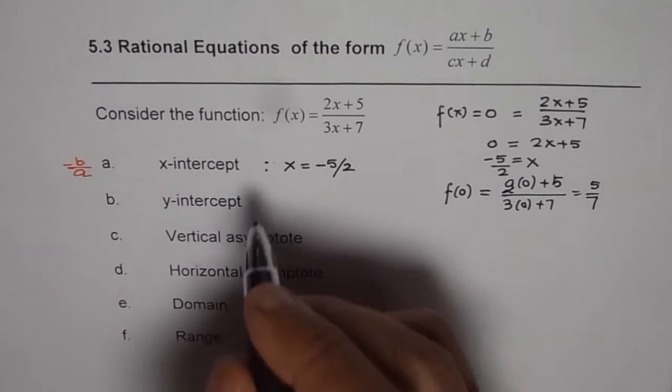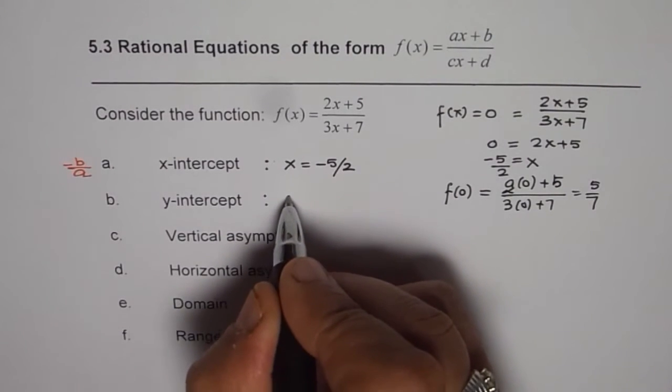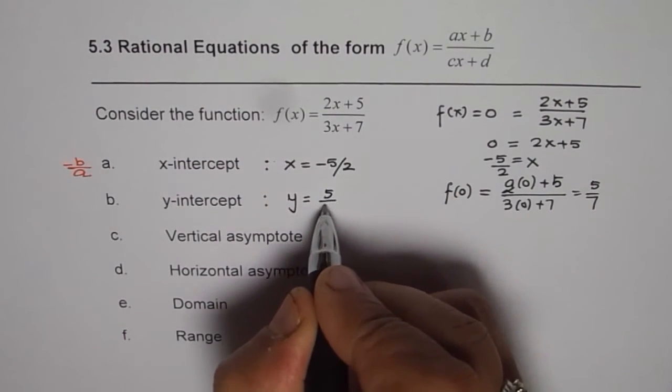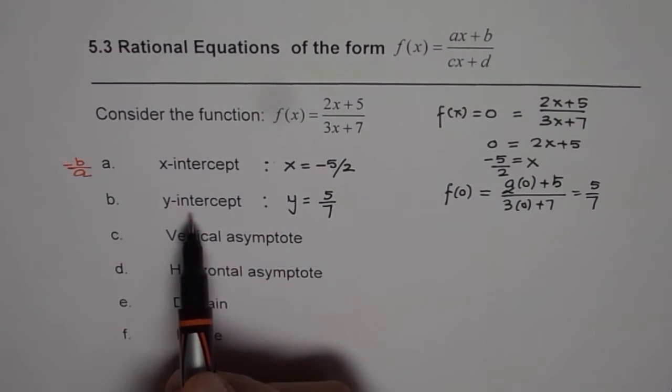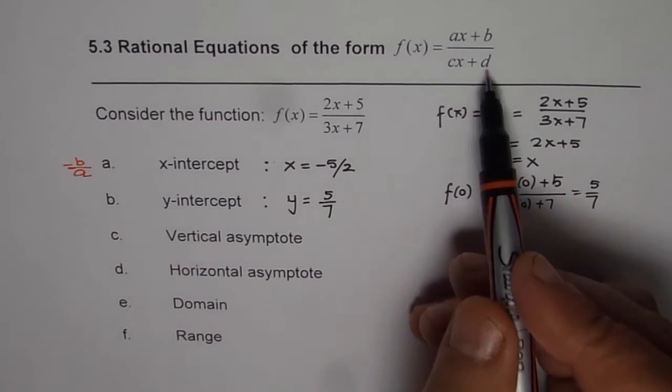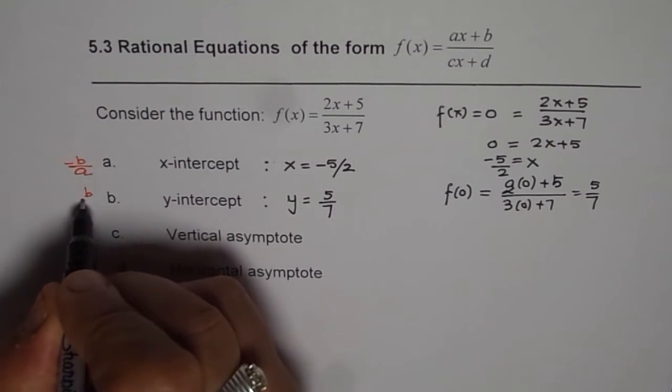Ratio of these two. So the y-intercept is at y equals to 5 over 7. As you have seen here, the y-intercept is b over d. So let me write here b over d.